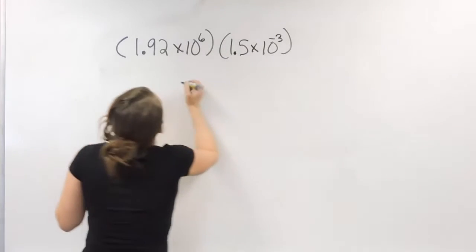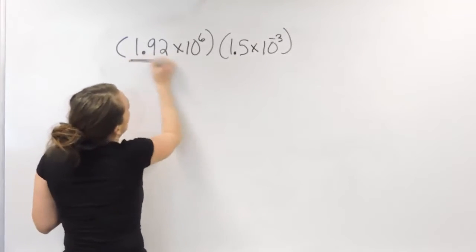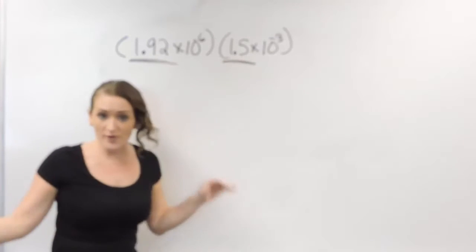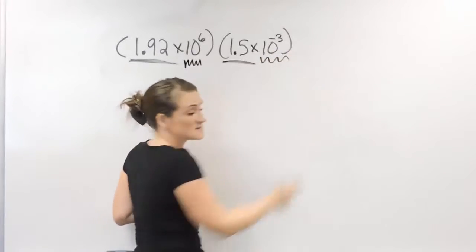So when it comes to this example, what we're going to do is we're going to multiply our number together with our number, and then we're going to use the product rule to multiply those exponents together.